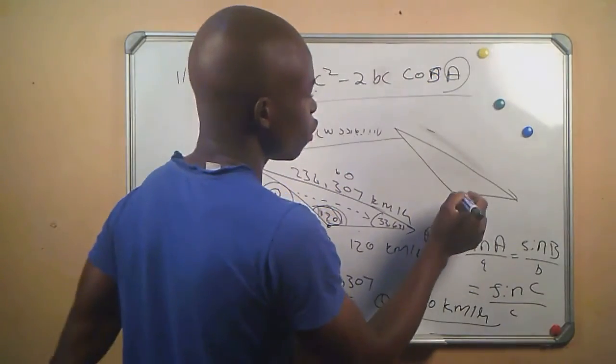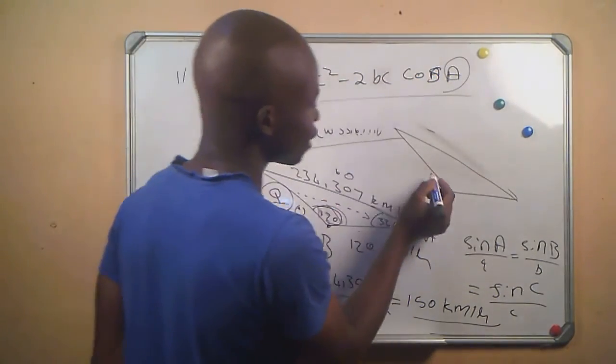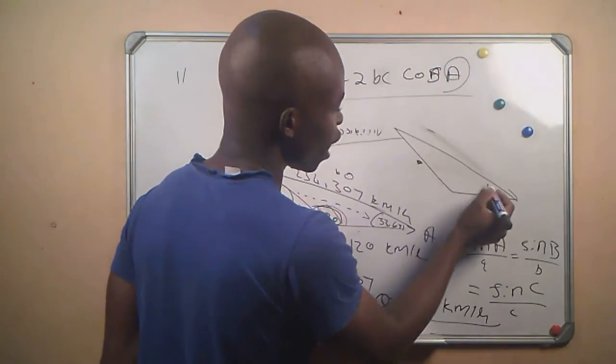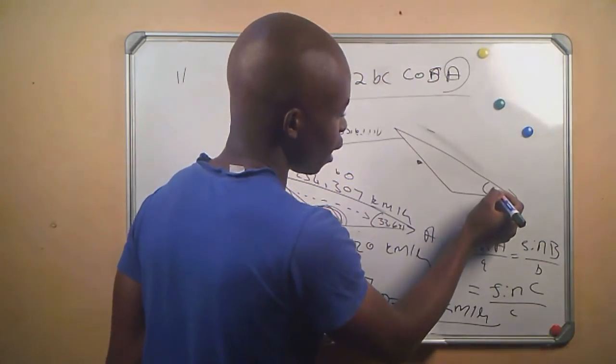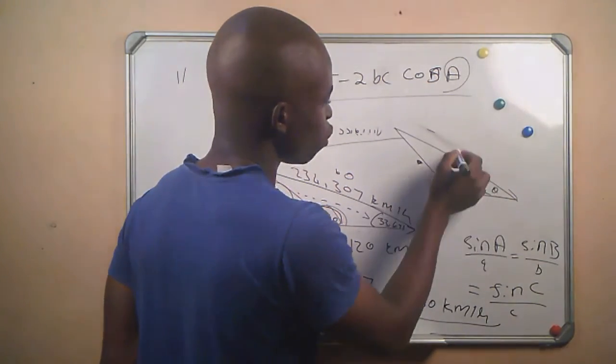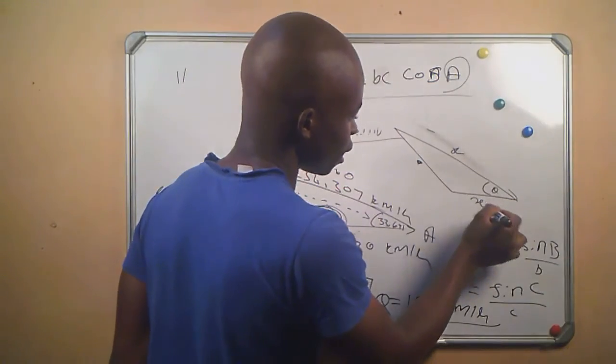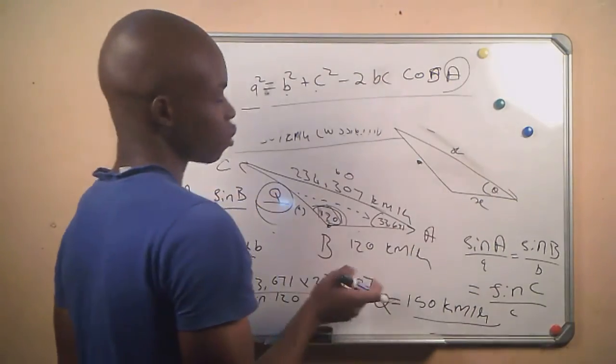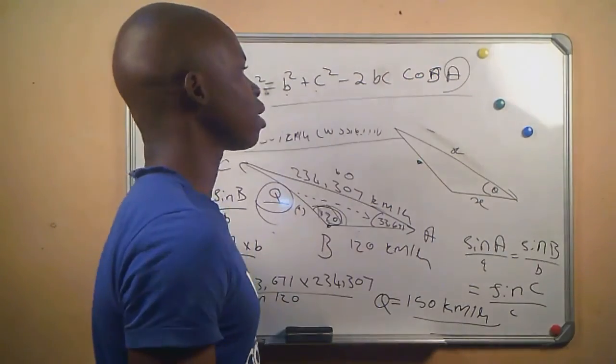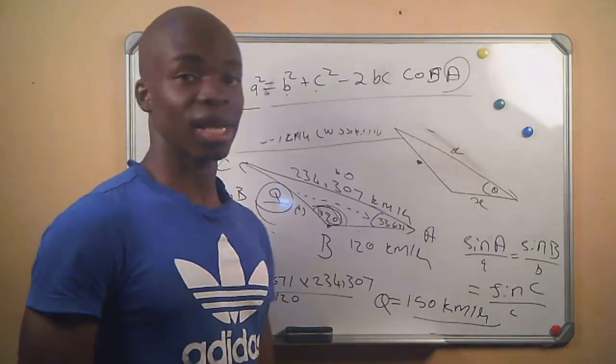If we were looking for this side and we have its angle, let's say it's theta, and we also have this and this, that's where we can use our cosine rule. So keep in mind the sine rule and cosine rule.